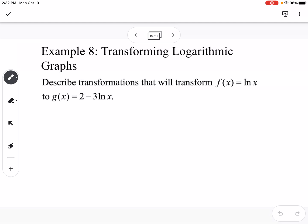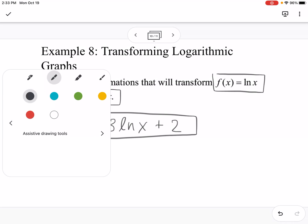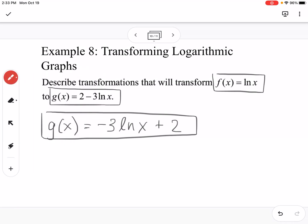It says transforming logarithmic graphs. We're going to describe the transformation that would transform f of x equals natural log of x to g of x equals 2 minus 3 natural log of x. First of all, they write the value, the 2, out front. It might help to rewrite this so that we can understand what's really happening. This would be negative 3 natural log of x plus 2. If we rearrange it that way, then we can identify our transformations a little bit easier.